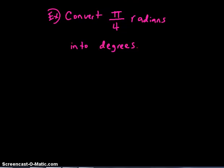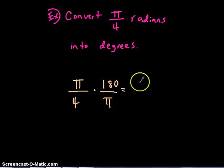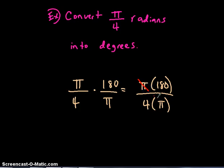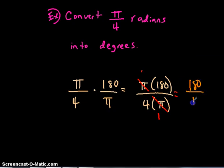For example, convert pi over 4 radians into degrees. What you do is take pi over 4 and multiply that by 180 divided by pi. You multiply across and get pi times 180 divided by 4 times pi. Since both have a pi on top and bottom, those pi's cancel out to be 1, and you wind up with the new expression 180 divided by 4.